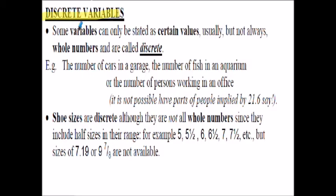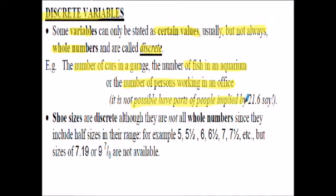Discrete variables - some variables can only be stated in certain values, usually but not always whole numbers, and they're called discrete values. For example, number of cars in the garage, number of fish in the tank, number of people working in an office. It's not usually possible to have parts of people - 21.6 say - working in an office. It doesn't make any sense.